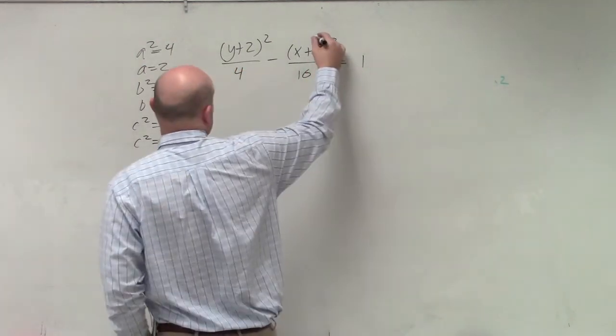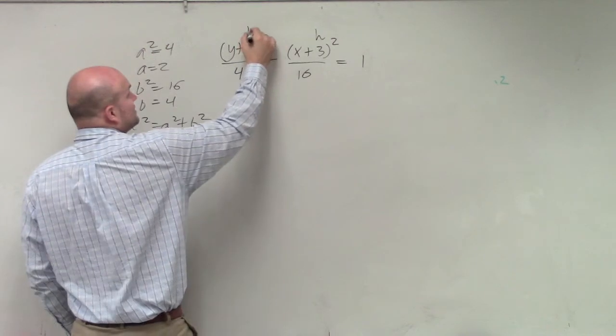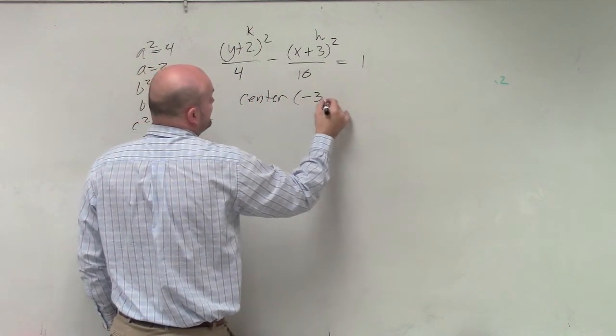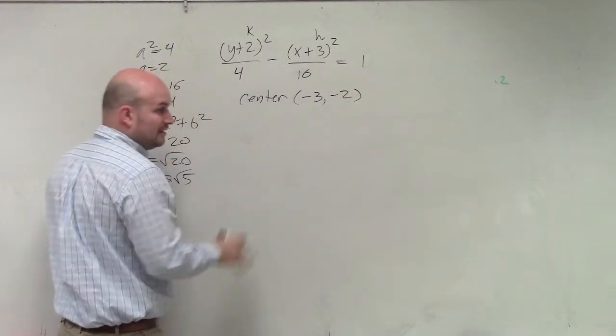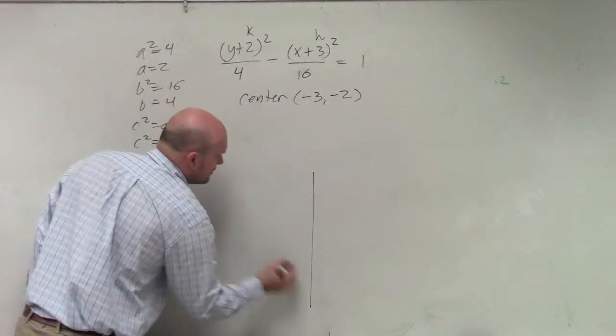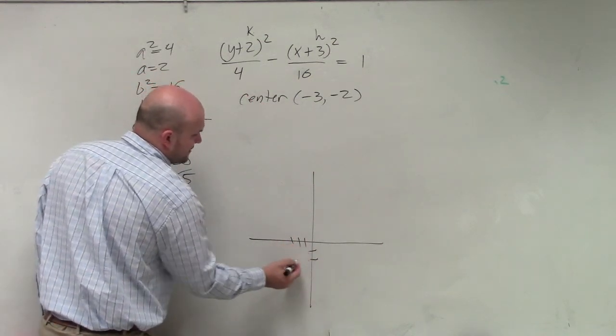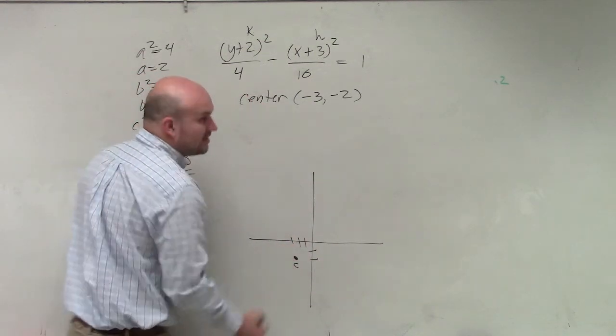The center here, remember, h is always with x, k is always with y. So my center in this case is going to be negative 3 comma negative 2. Now I have enough information to plot. So I find my center, which is negative 3, negative 2. Once I find my center, I label it.